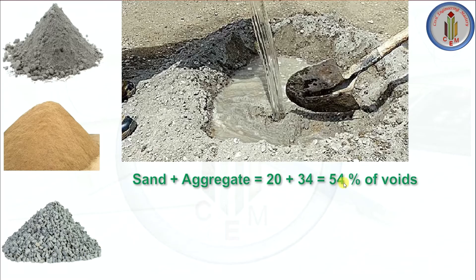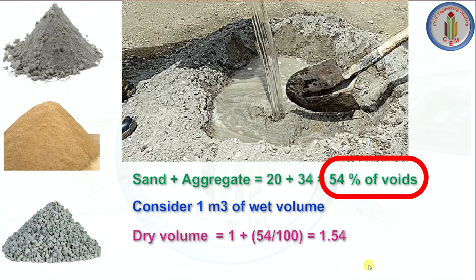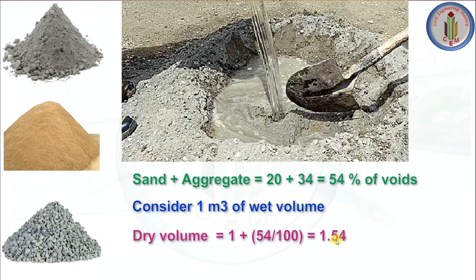Sand has 20 percent voids and aggregate has 32 to 34 percent voids. Cement is a fine particle material so its voids can be negligible. Sand plus aggregate together gives 54 percent voids — I have considered 34 percent for aggregate. For 1 meter cube of wet volume, dry volume equals 1 meter cube plus 54 percent voids, giving a dry volume factor of 1.54. This is why we consider 1.54 as the dry volume factor. For any n meter cube of wet volume, multiply by 1.54.